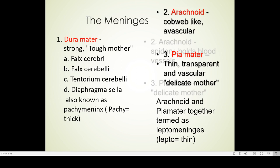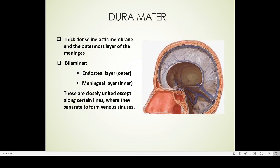Now let us discuss in detail about each of these layers. First is the dura mater. It is a very thick, dense, and inelastic membrane and the outermost layer of the meninges. It has two layers: the outer layer known as the endosteal layer, and the inner meningeal layer. These are closely united except along certain lines where they separate to form the dural venous sinuses.